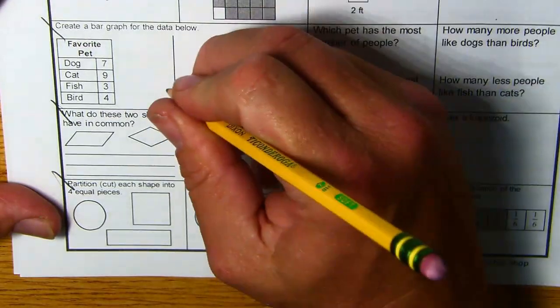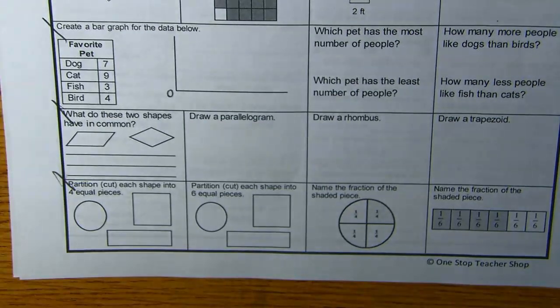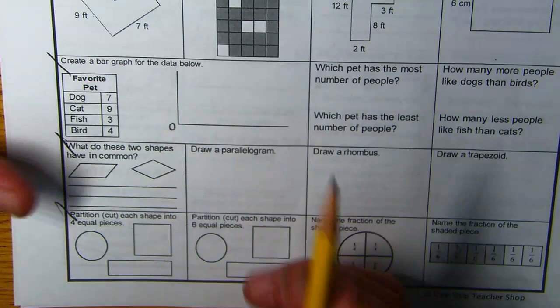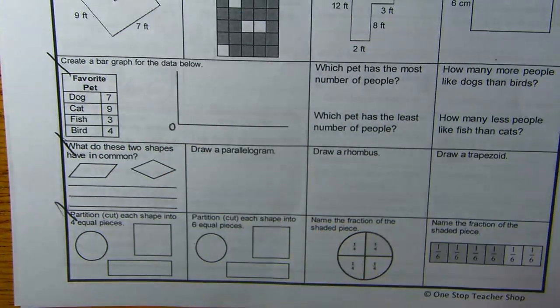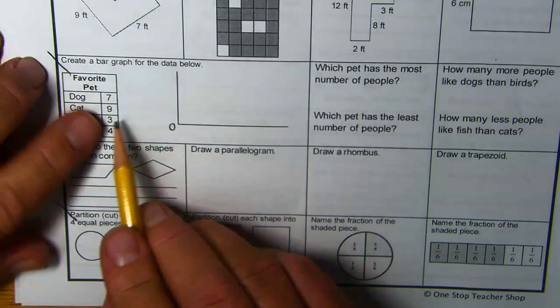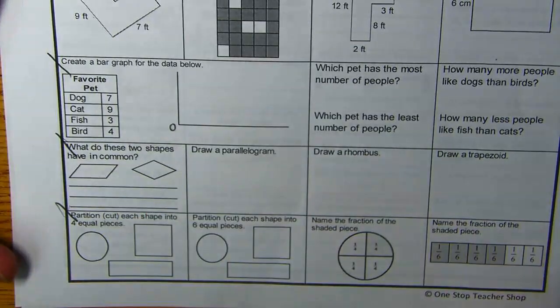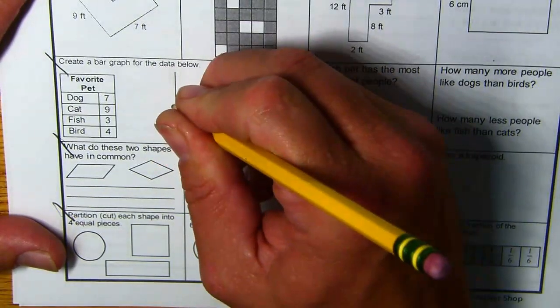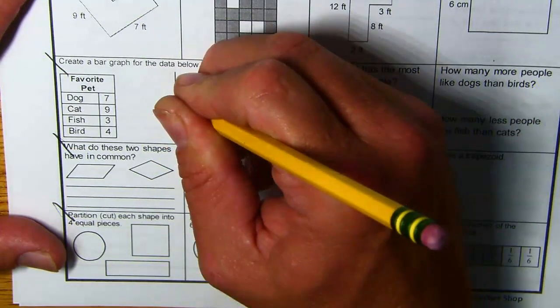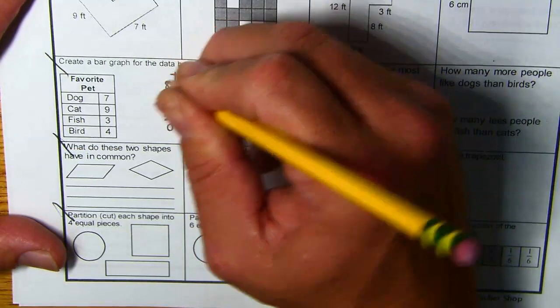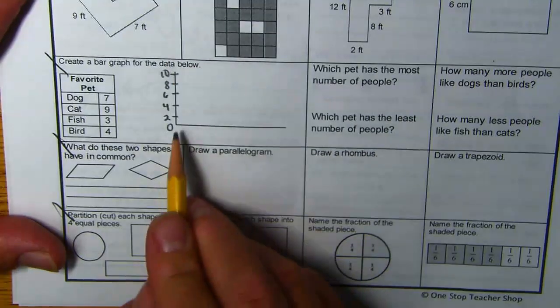So, you want to start at zero, and you just want to make sure your intervals are the same. So, you're counting the same amount in between each number, and you want to make sure you cover all your numbers. So, we got to go at least past nine. Skip counting by twos is usually a good idea.